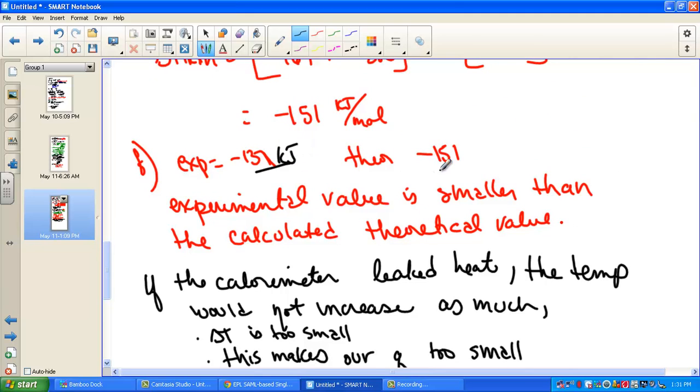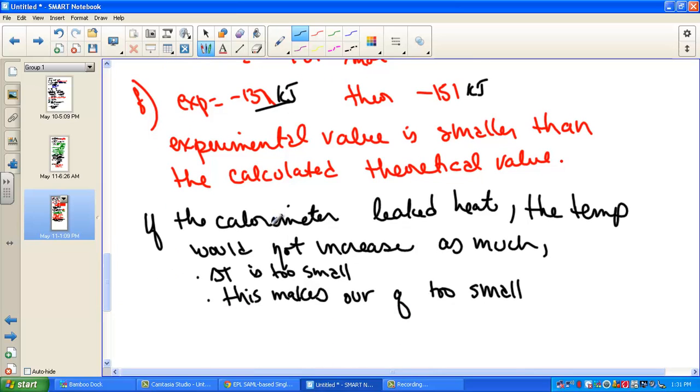If our experimental value, 137, was indeed smaller than the theoretical or the calculated value, a loss of heat energy indeed could explain that. If the calorimeter was leaking heat, the temperature would not rise. Therefore the delta T would be too small and our calculations would show that the Q, the heat of reaction, came out too small. And there's the A plus on this answer.